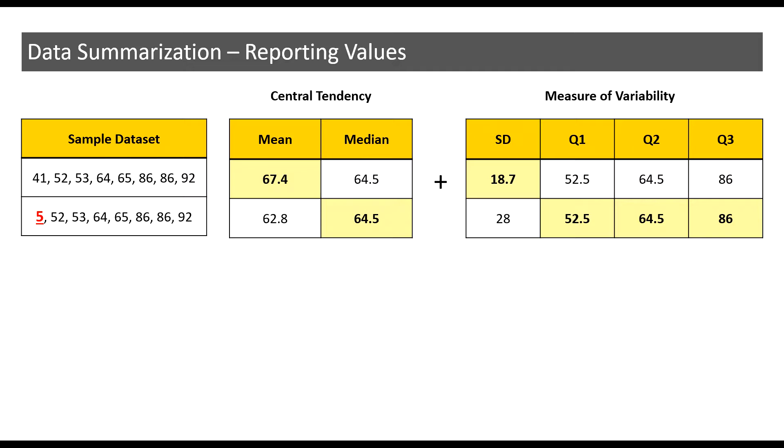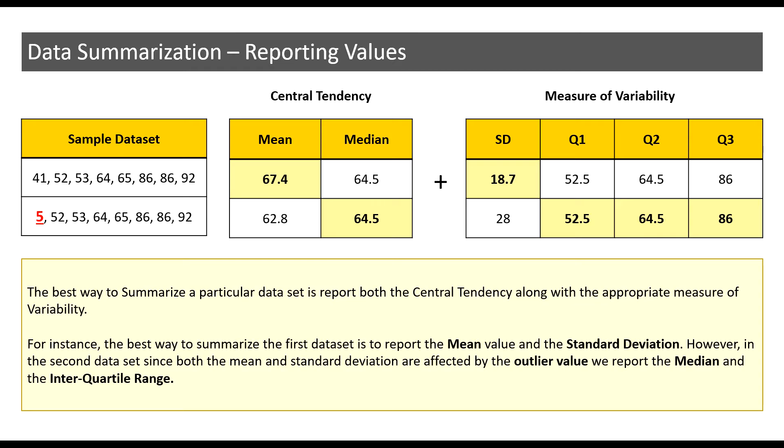However, in the second data set, the one below, we see that both the mean and standard deviation are affected by the outlier value, that is the student who has scored 5%. Hence, we tend to report the median and the interquartile range in this case.